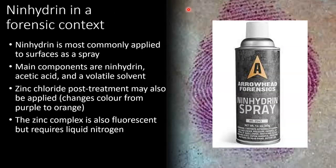In a forensic context, ninhydrin is most commonly applied to surfaces as a spray. The main components of that spray are ninhydrin, acetic acid — because you need a mildly acidic environment to drive the reaction — as well as a volatile solvent. That solvent needs to be volatile because we want it to evaporate as quickly as possible. The reason is that we're forming a dye, and if the solvent and the dye are present together for a long period of time, the dye is going to run. You can think about it like writing with ink on paper — if the paper gets wet, your writing will blur together. The same can happen to fingerprints.